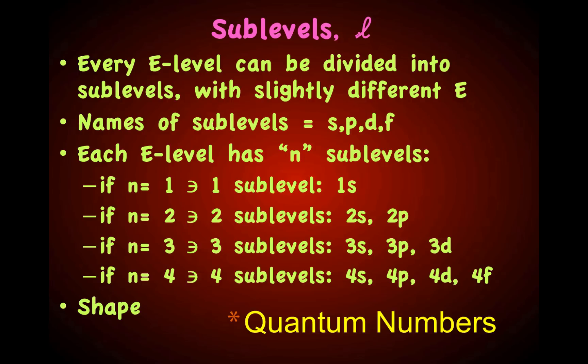The sublevel tells you the shape of the electron cloud. S, P, D, and F sublevels all have different shapes.